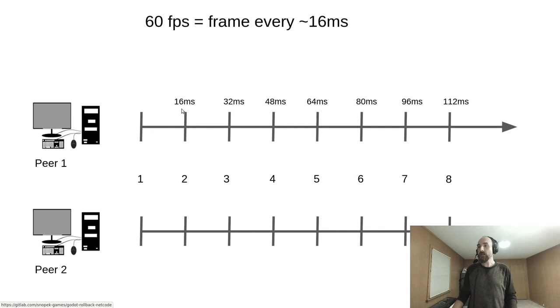What problem is Rollback and Prediction even trying to solve? Let's say you have two peers. The same applies to client-server, but for simplicity, we'll just look at peer-to-peer. Your game runs at 60 frames per second, which means you need to render a new frame every 16 milliseconds.